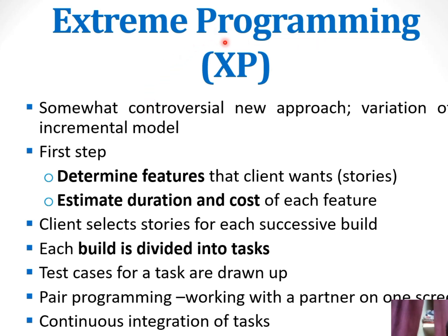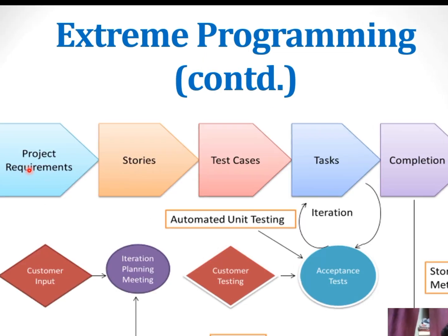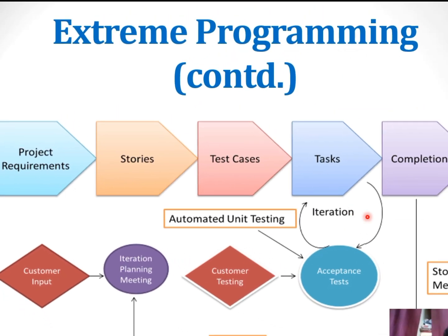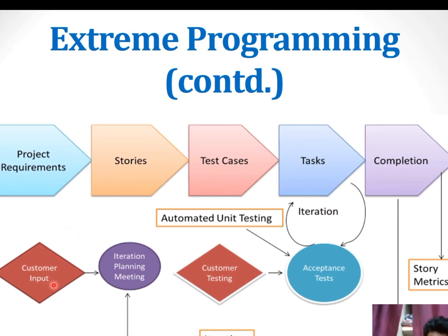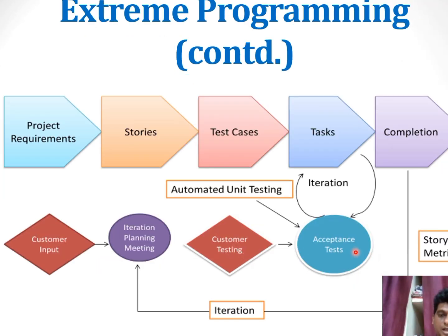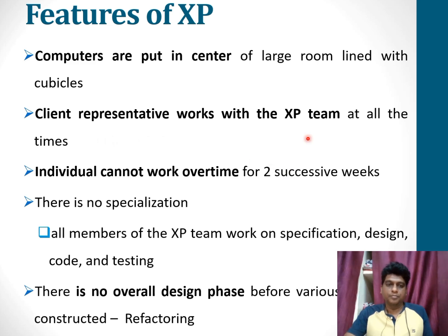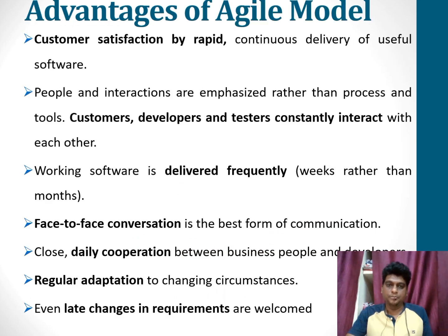The next type is Extreme Programming. Based on determining features, duration, and cost, the working module is divided into several tasks. Project requirements are classified into various tasks, and with the help of the iteration rule, customer input and customer testing are obtained. If accepted, it proceeds to the final version; otherwise, the iteration process is repeated, and a meeting is held with the customer and developers. A key feature is that clients work with the programming team in iterations no longer than two successive weeks, and all team members work on all phases including specification, design, coding, and testing. There is no overall design phase.